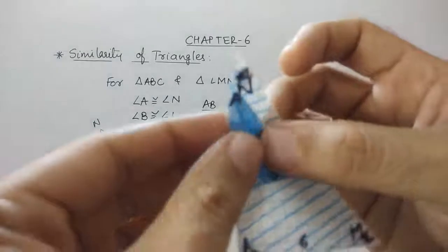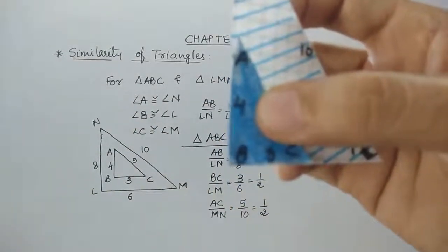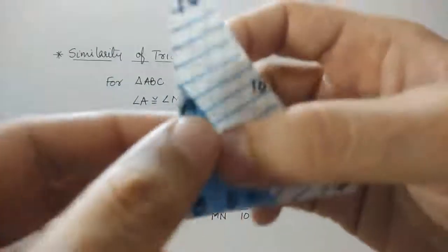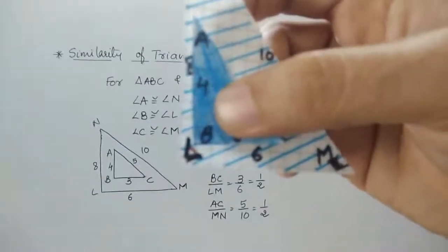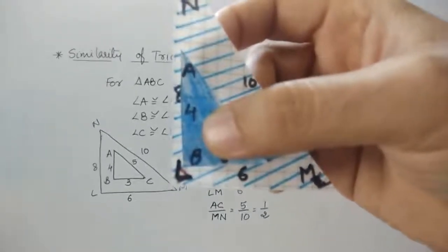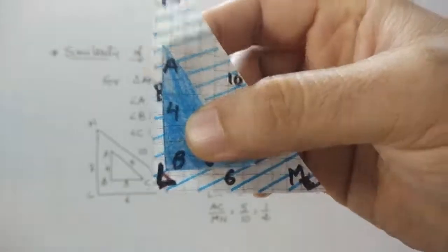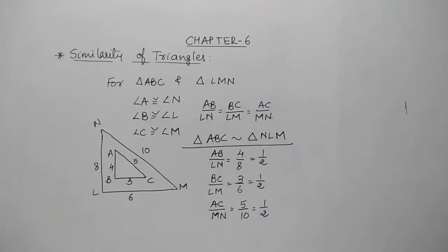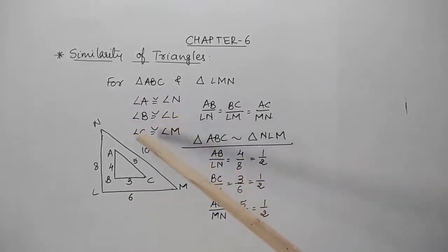Now the second angle: angle B corresponds with angle L. You can see angle B equals angle L — both are right angles, so they overlap each other. The third: angle C and angle M are equal in measure. So as shown in the diagram, A is same as N, B is same as L, and C is same as M.